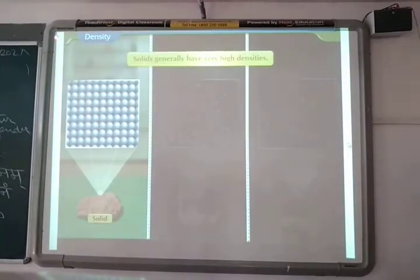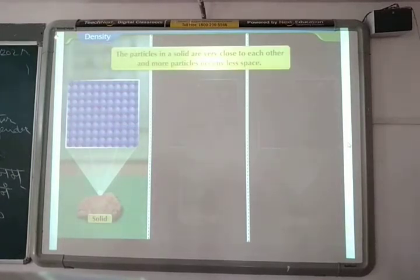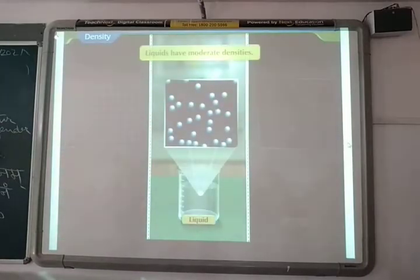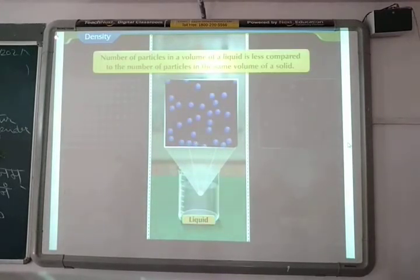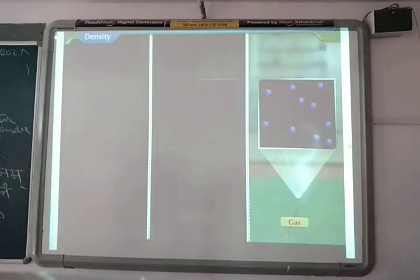Solids generally have very high densities. Particles in solids are very close to each other and more particles occupy less space. Hence, they are heavy. Liquids have moderate densities, generally lesser than solids. This is because the number of particles in a volume of the liquid is less compared to the number of particles in the same volume of the solid. Gases have very low densities as particles in gas are far apart from each other. They are hence very, very light.